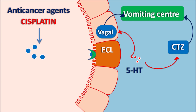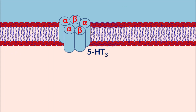At both the CTZ and vagal neuron locations, 5-HT3 receptors are present, and these are blocked by Ondansetron. The 5-HT3 receptors are ionotropic receptors — all other 5-HT receptors are metabotropic, meaning they are G-protein coupled receptors. The 5-HT3 receptors are coupled with ion channels and are pentameric in nature, made up of five subunits.